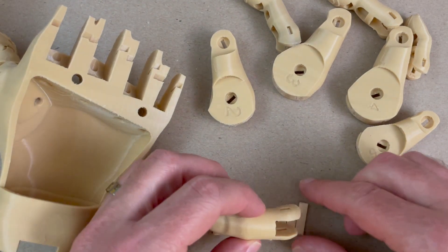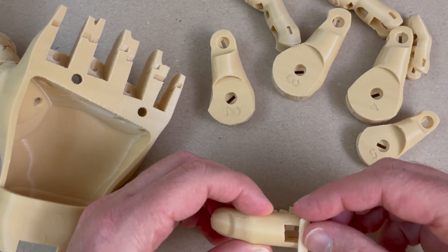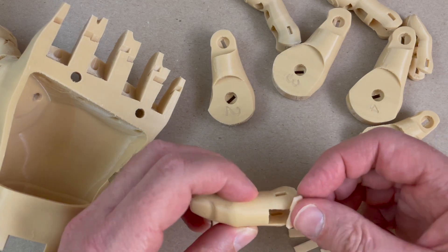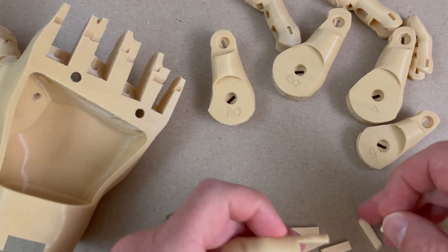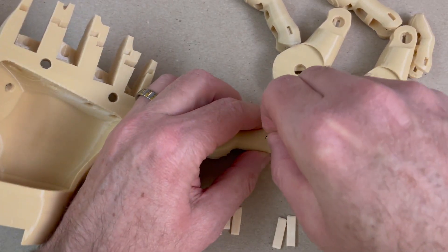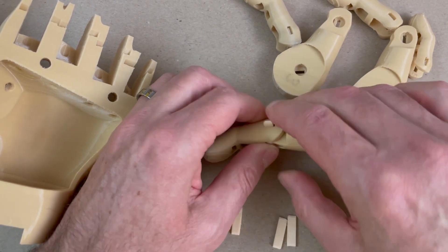I generally do the fingers in order. I don't think you have to, but I do. I start with the end hinge. I just measure each one, find the one that's supposed to fit there, put it in.